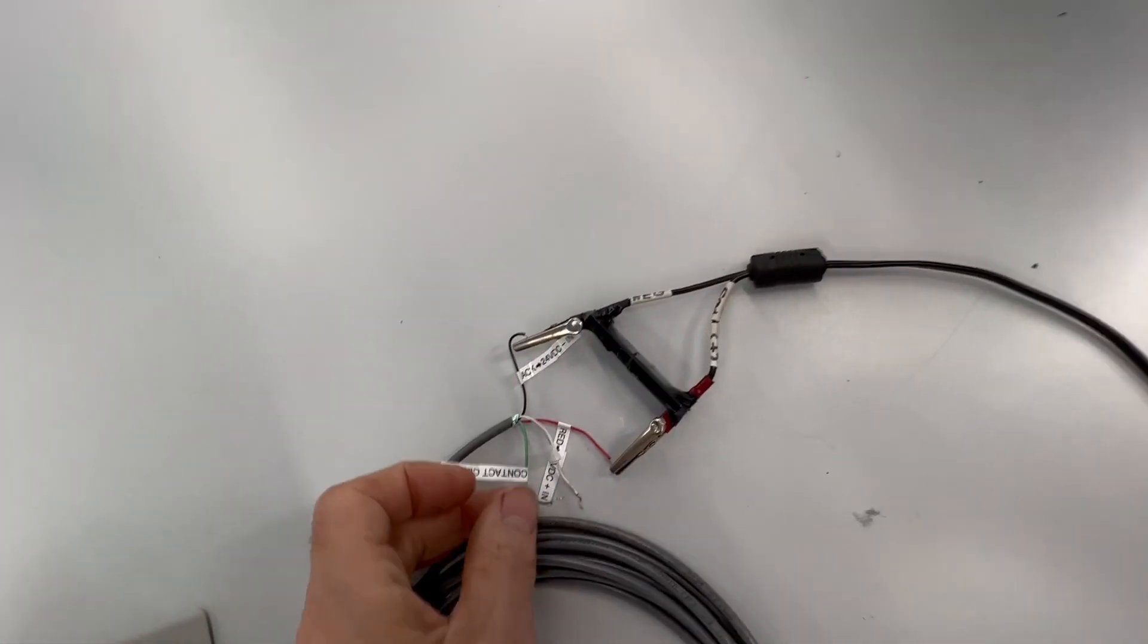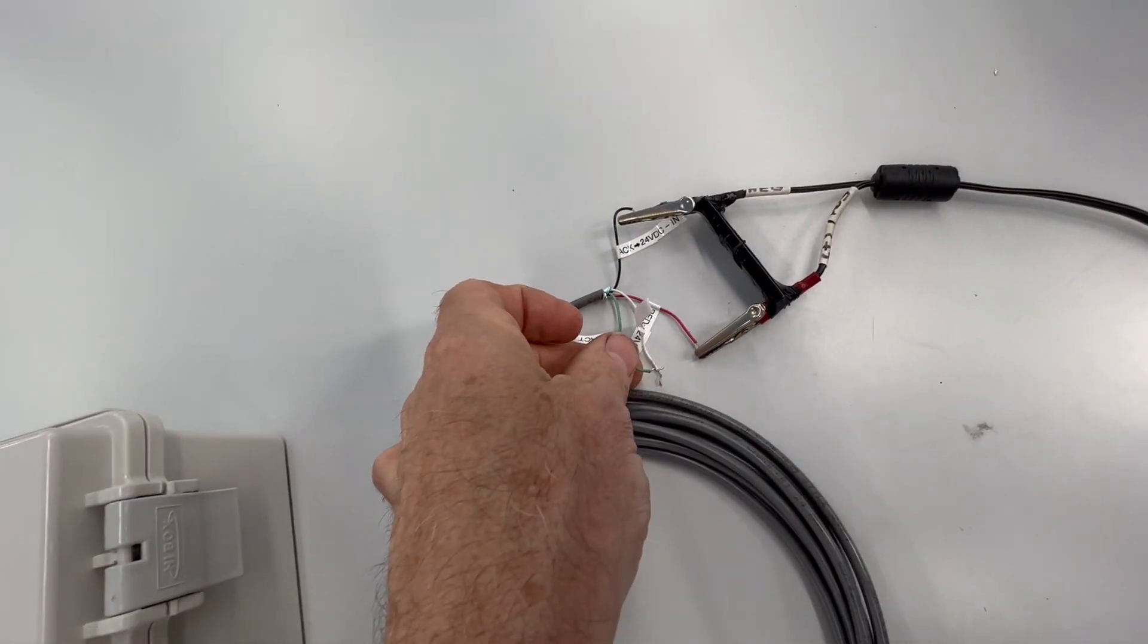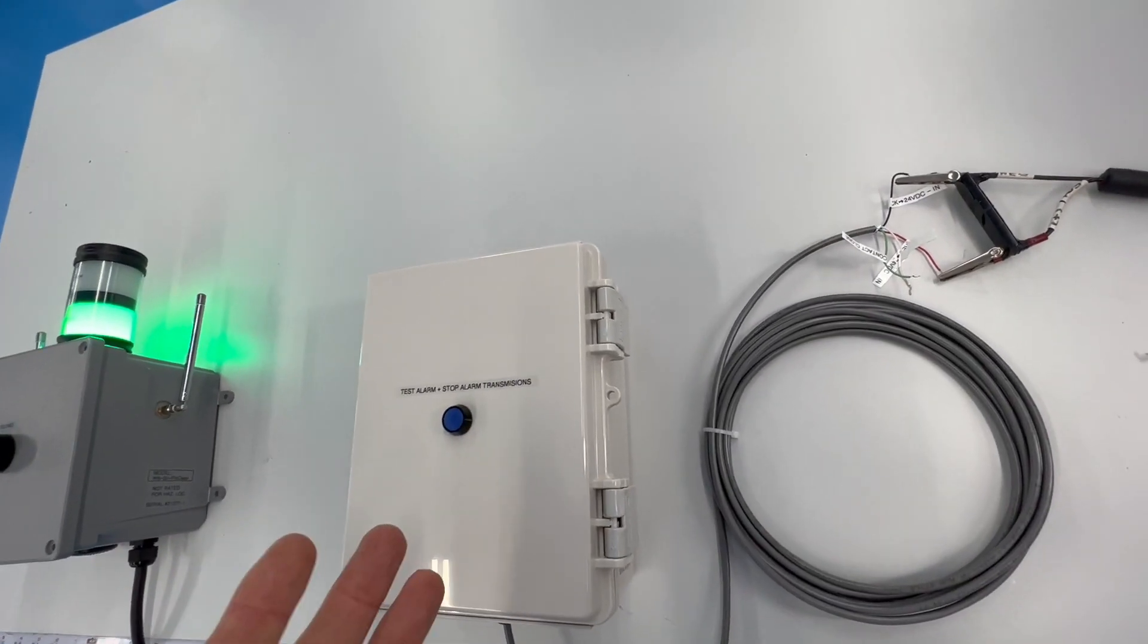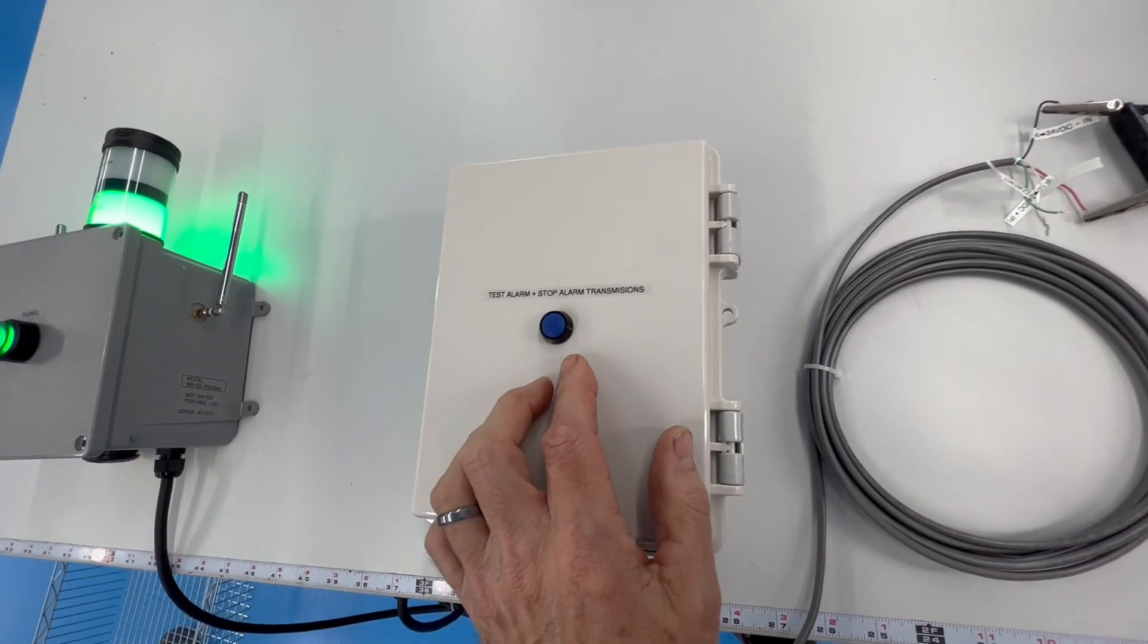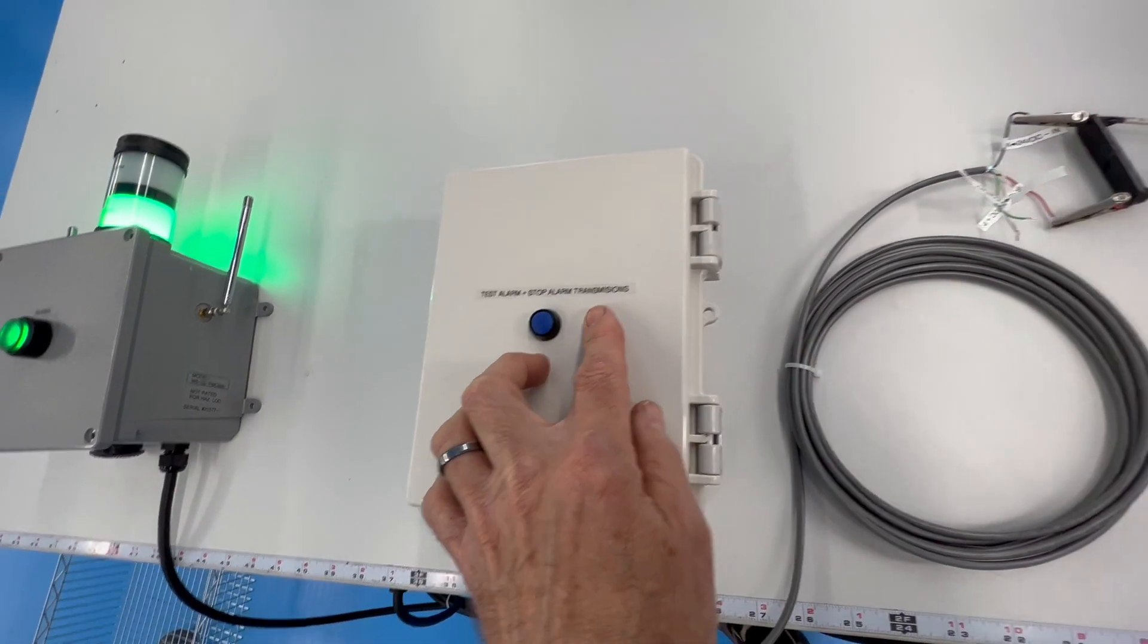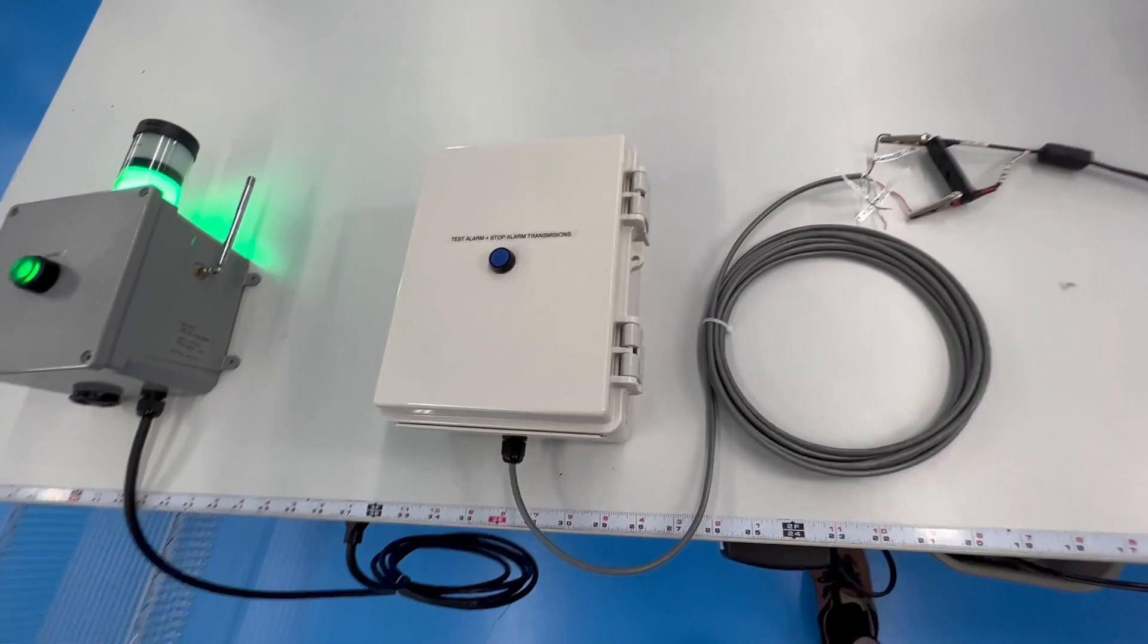If this contact close were to stay closed for ten minutes, it would send another transmission. It would keep sending transmissions every ten minutes unless this button is pushed, which stops future transmissions. So that's how it works.